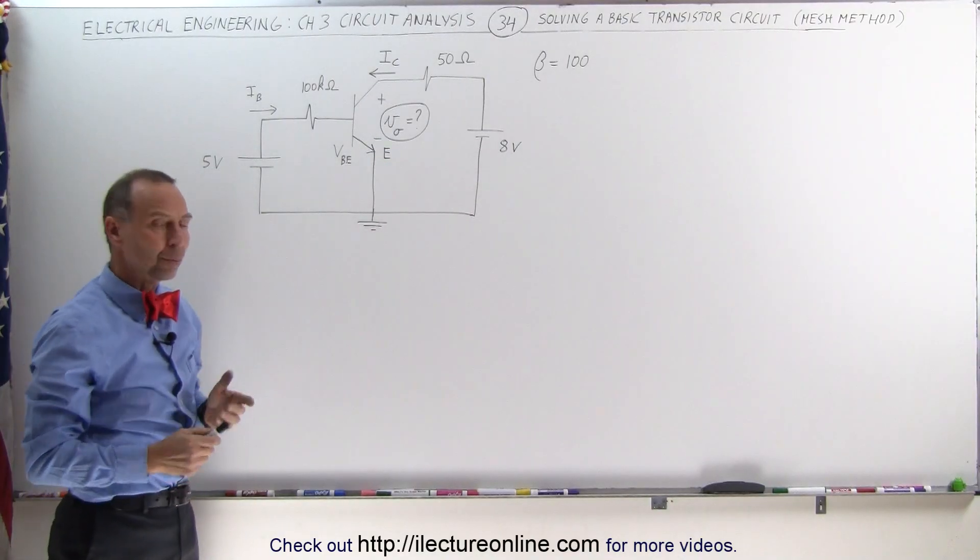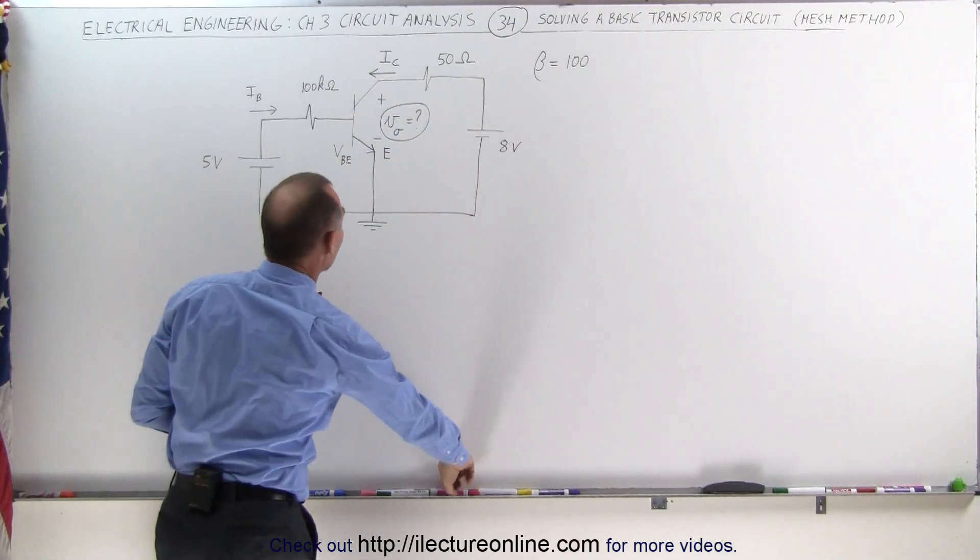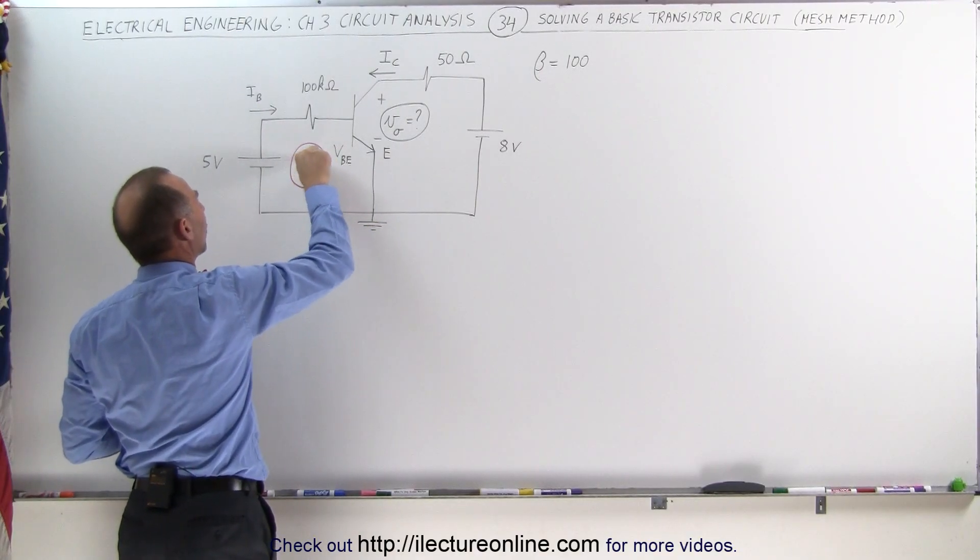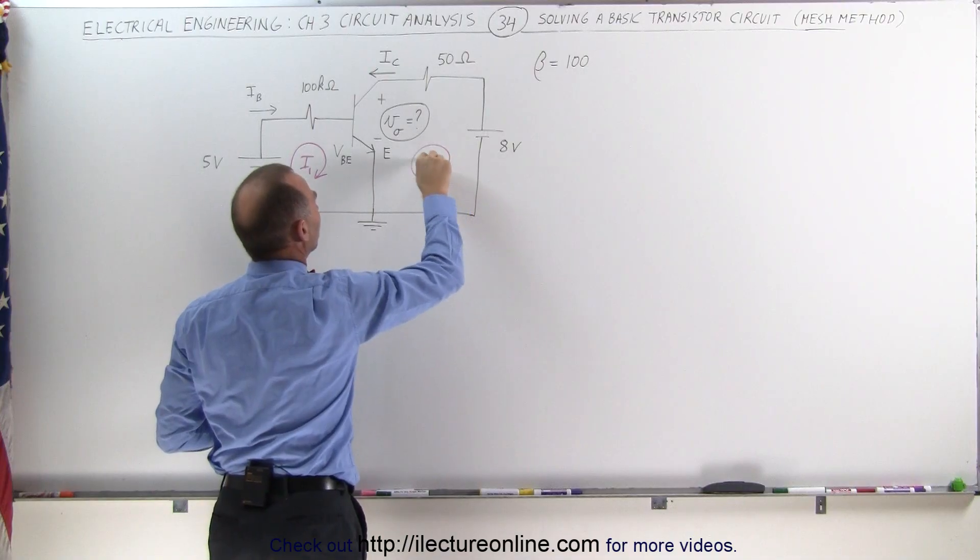So how do we determine that? We're going to use the mesh methodology of solving the circuit, and so we're going to find current I1 and we're going to find current I2.